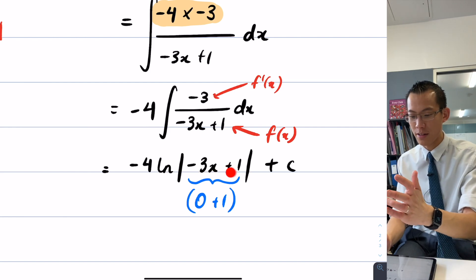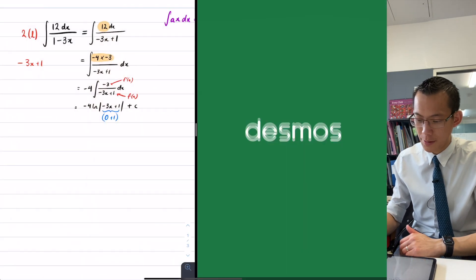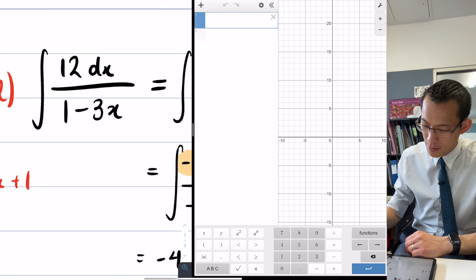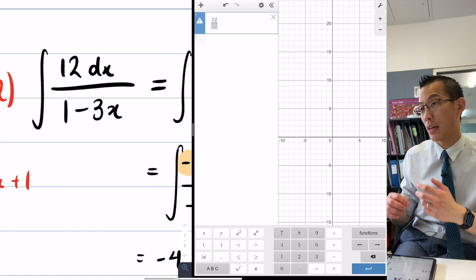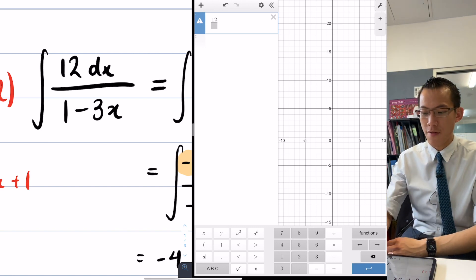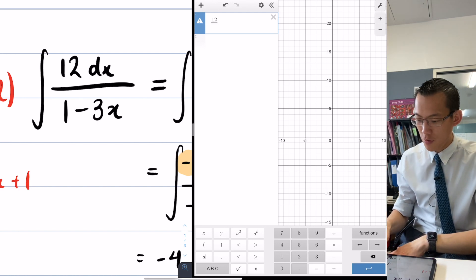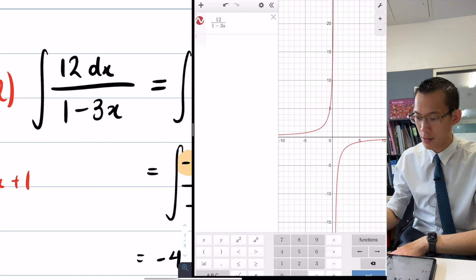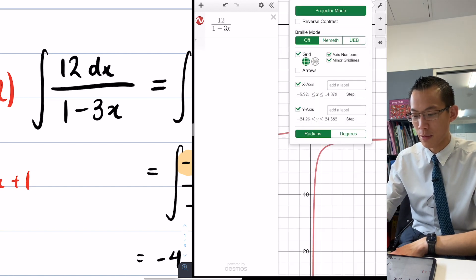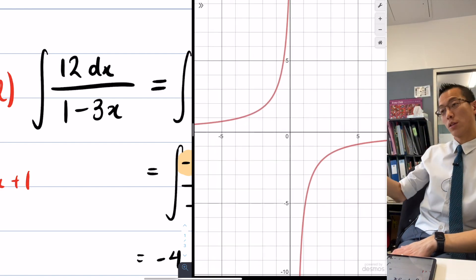But even in the case where you do get something negative in here, you're okay because of those absolute value signs. The absolute value signs kind of save you. If we were to take the original question, 12 on 1 minus 3x, do you remember one of the main reasons why we care about integration is because it helps us work out areas. So if I want to work out an area under a curve, I start to integrate.